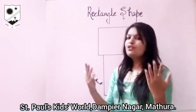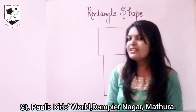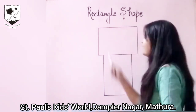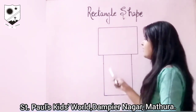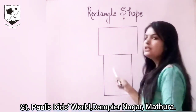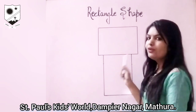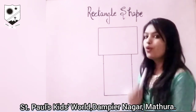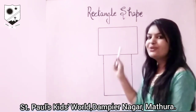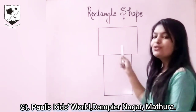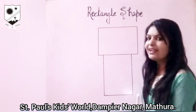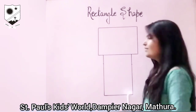Now we will do an activity. You can see I have drawn these two rectangles for you. We will make a boy using these two rectangles. How? Let's see.